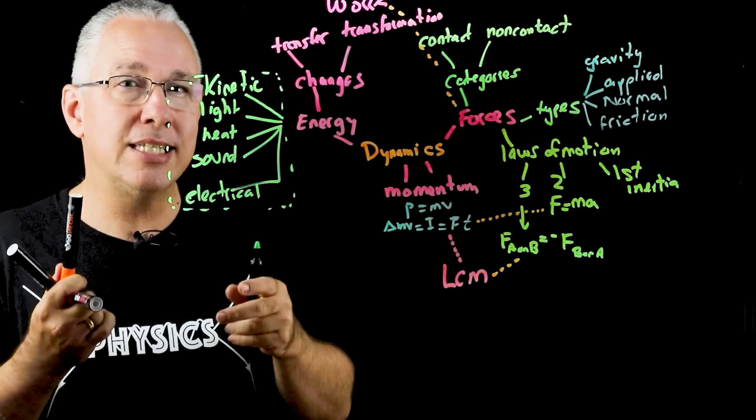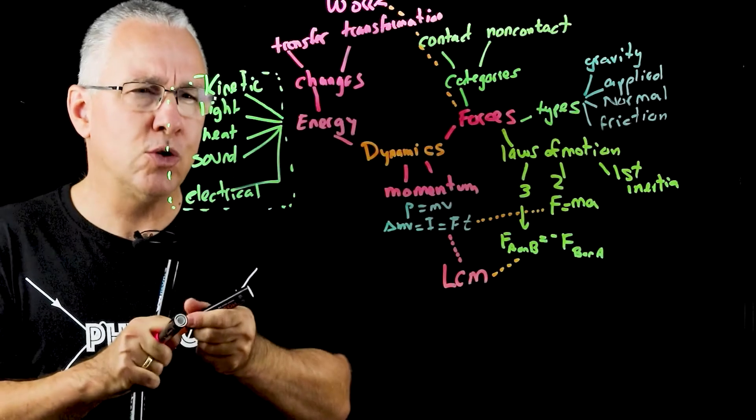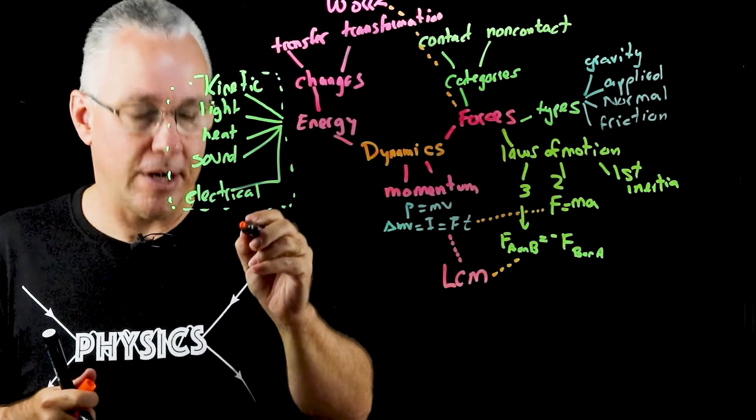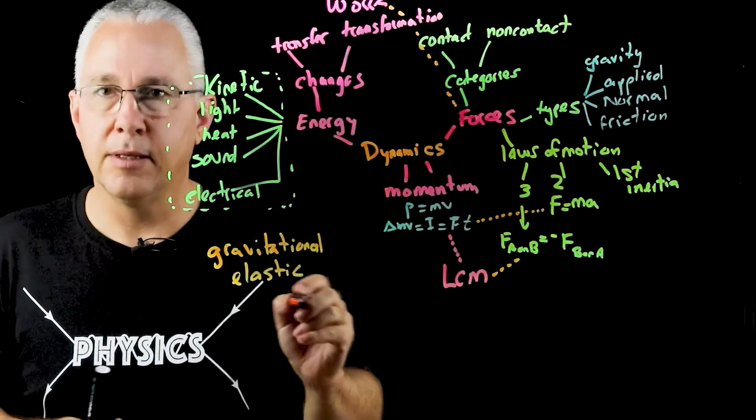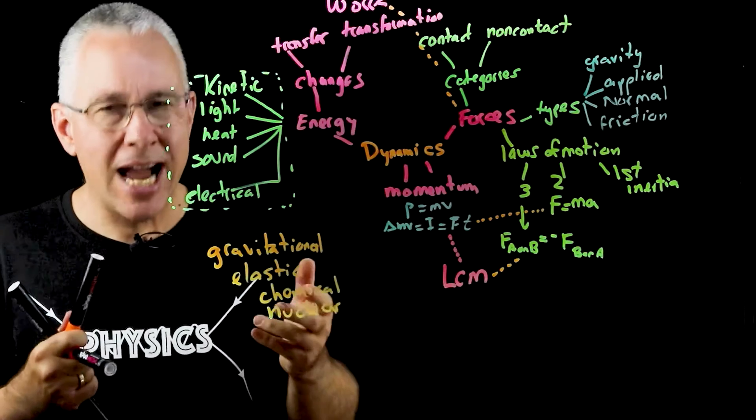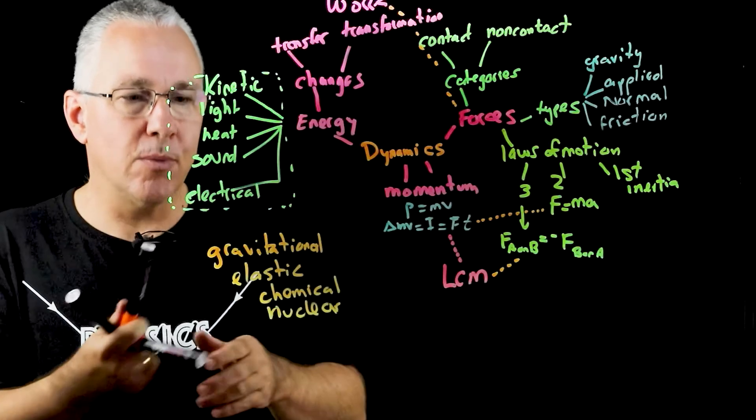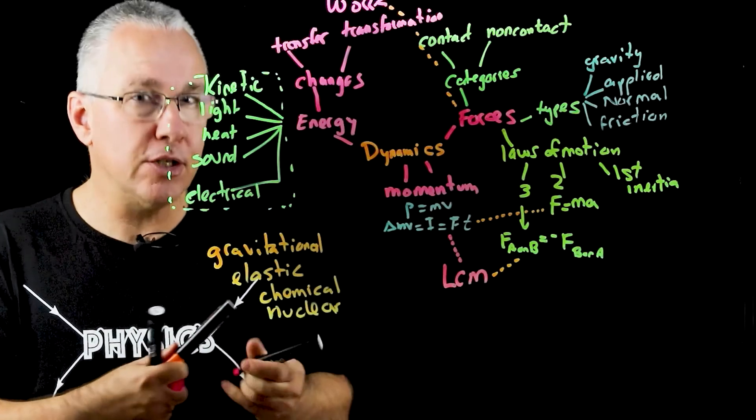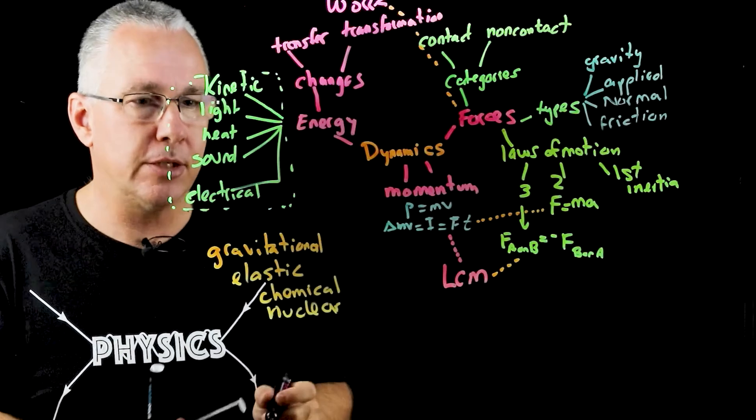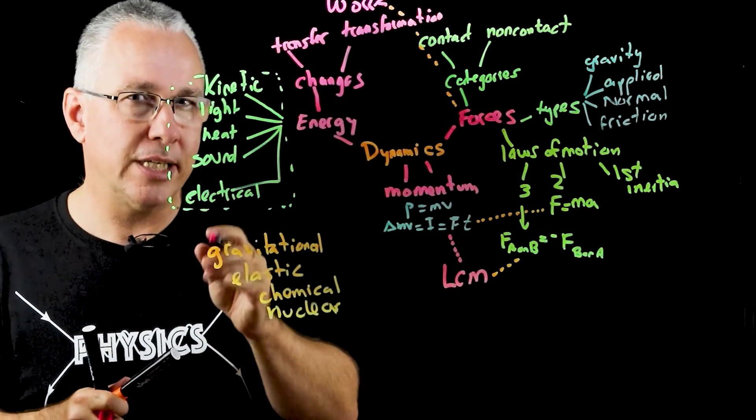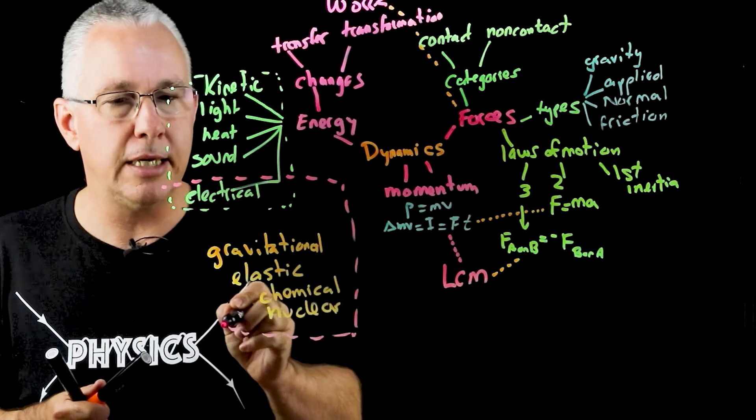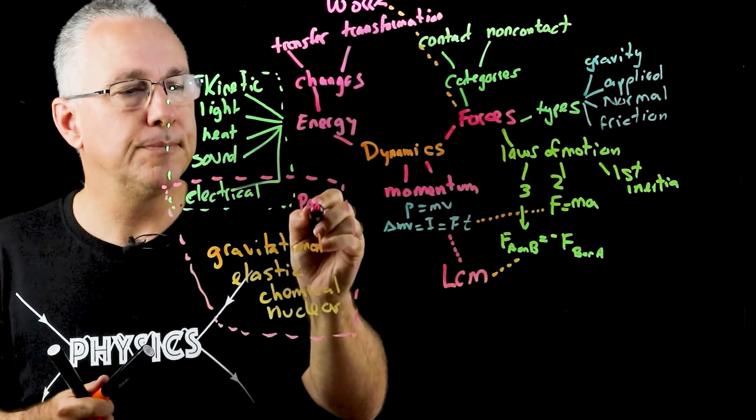But we could also have energy as it is stored in what we often refer to as a field. So in essence, when we have that, we can talk about for example gravitational, there is elastic, there is chemical, and there's nuclear. Now all of these examples are actually stored energies, and so what we do is we actually refer to these as potential energy. So we have gravitational potential energy, elastic potential energy, chemical and nuclear potential energy. But in fact, electrical actually can also be described in terms of potential as well, and so what we can do is we can group all of these here as our potential energy types.